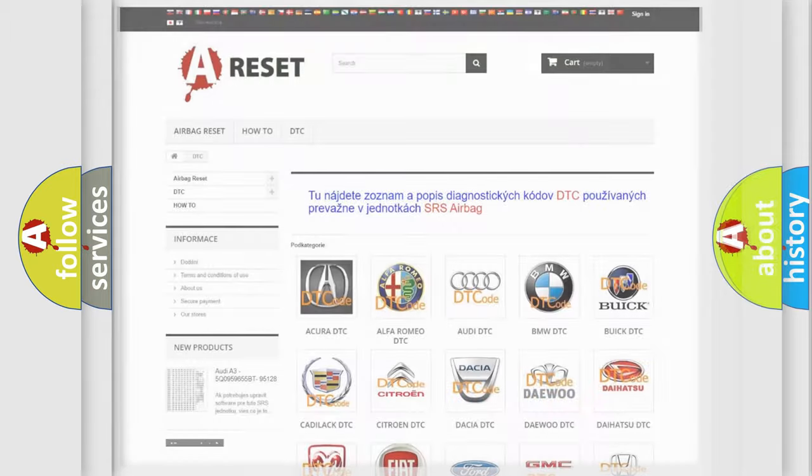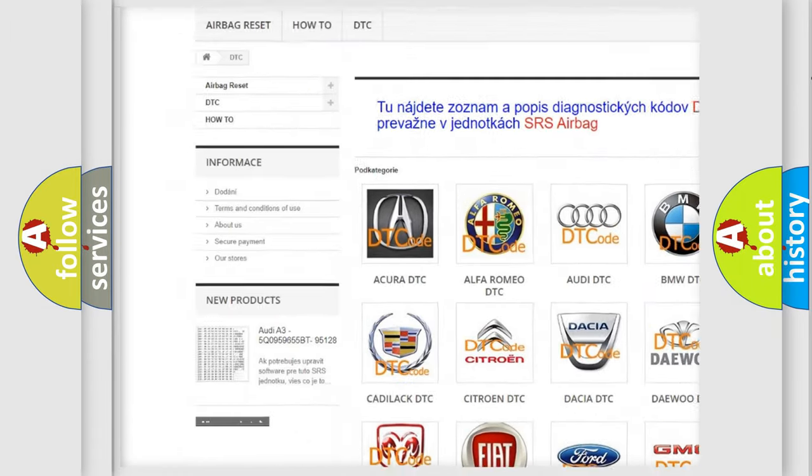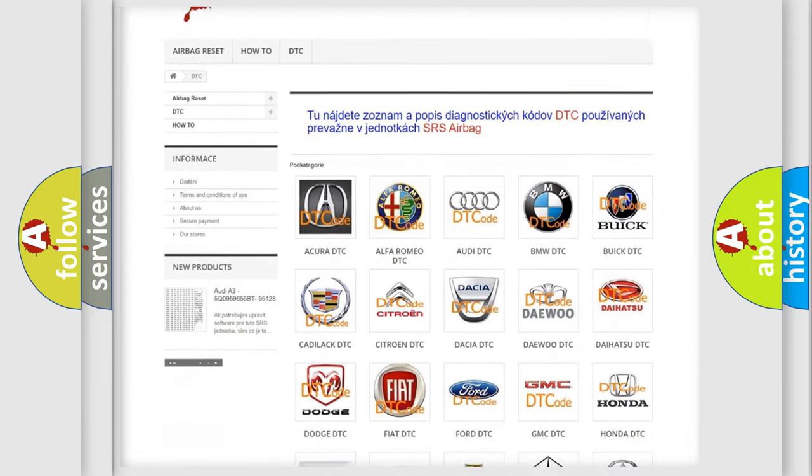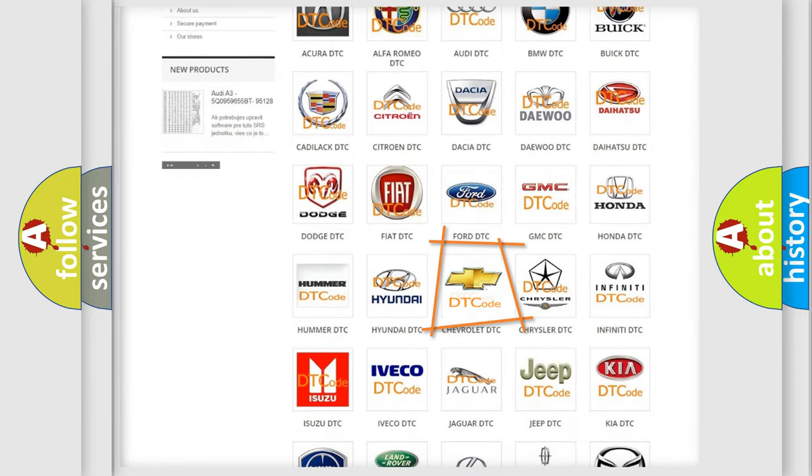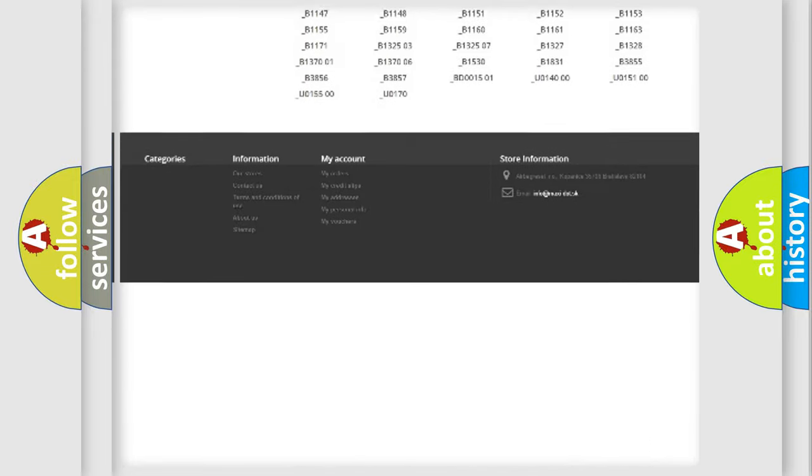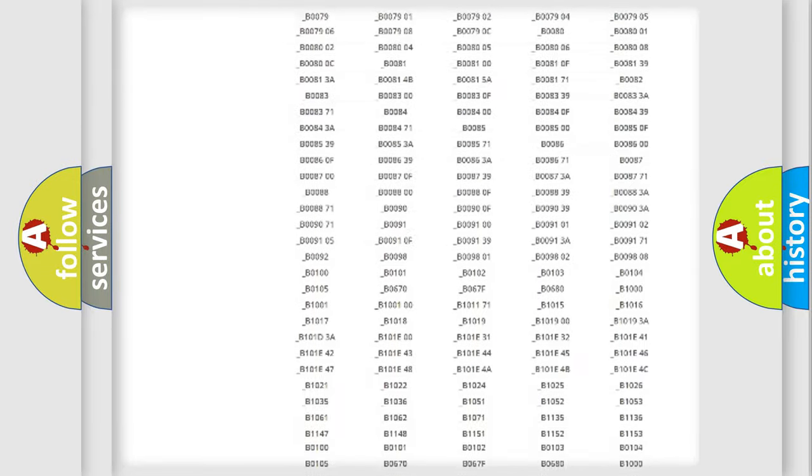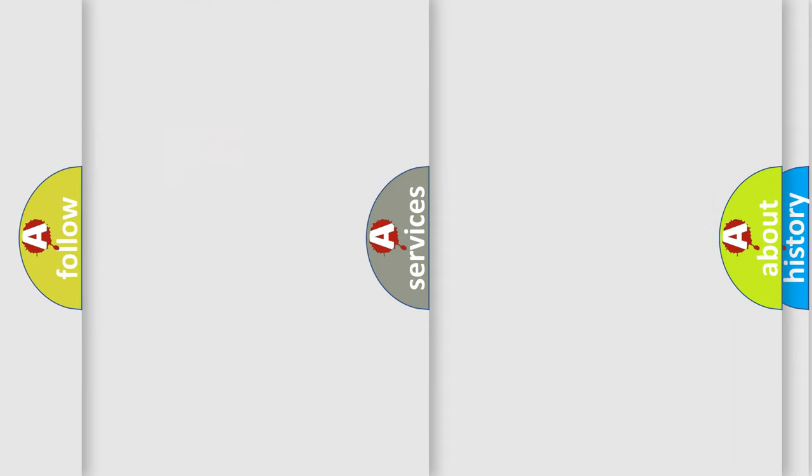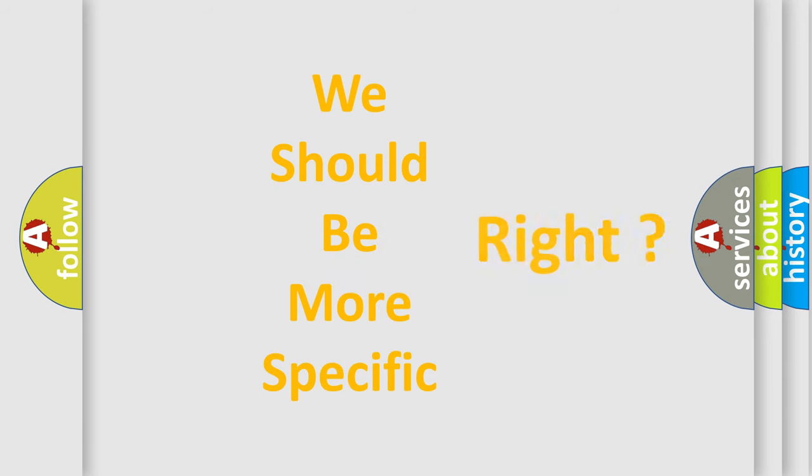Our website airbagreset.sk produces useful videos for you. You do not have to go through the OBD2 protocol anymore to know how to troubleshoot any car breakdown. You will find all the diagnostic codes that can be diagnosed in Chevrolet vehicles, and many other useful things. The following demonstration will help you look into the world of software for car control units.